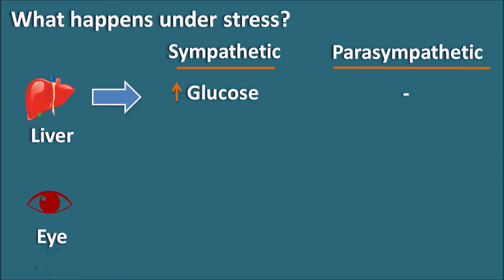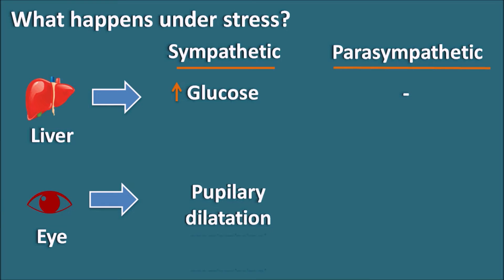The next organ is the eye. Under stressful conditions, suppose we are writing an exam and a question is not clear — in order to see it clearly, we dilate our eyes. So by pupillary dilation we can observe the situation more clearly. Under stressful conditions, the pupil size is increased. The sympathetic system produces pupillary dilation, while the parasympathetic system produces the opposite effect — pupillary constriction.